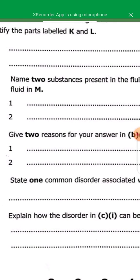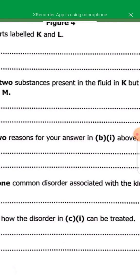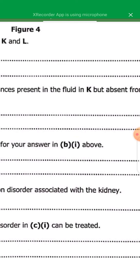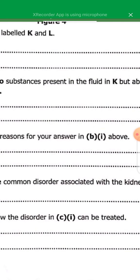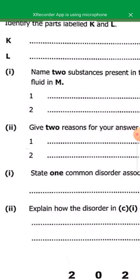C Roman Numero 1 says, state one common disorder associated with the kidney. So we have inflammation of the kidney. This is where the kidney gets to be swollen due to the blockage of the vessels.